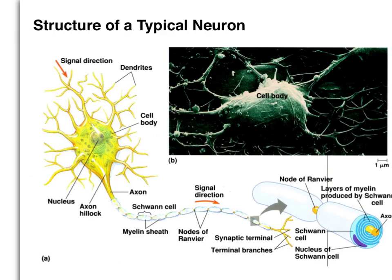Let's look at the general structure of a typical neuron. A neuron is generally composed of three parts: dendrites, a cell body or the soma, and an axon. There's very little structural difference between the dendrites and the axon — the dendrites and the axon are just extensions of the cell membrane that make up the cell body.